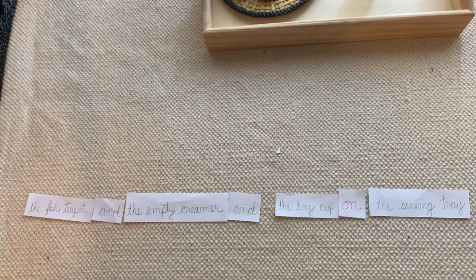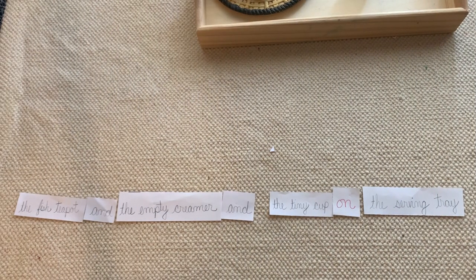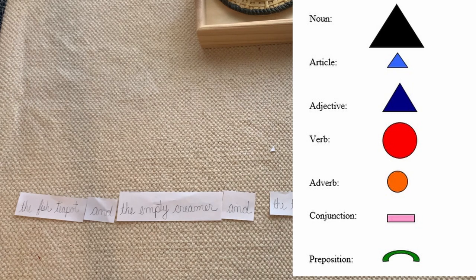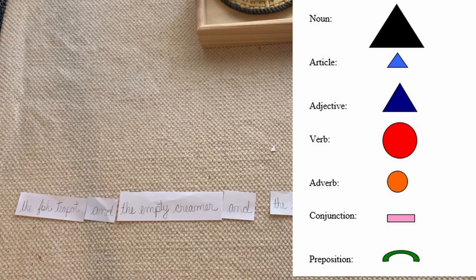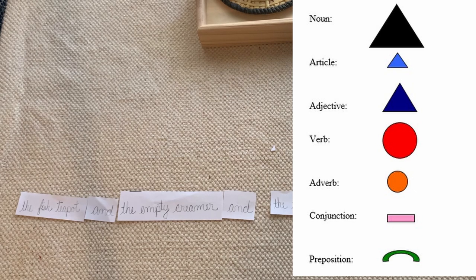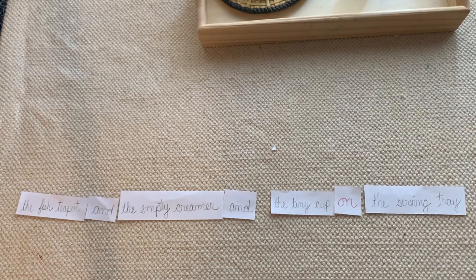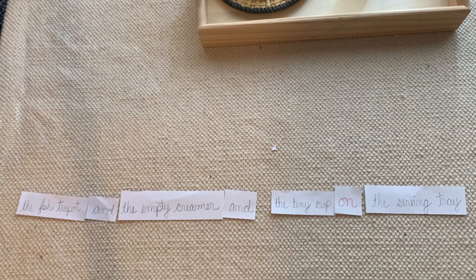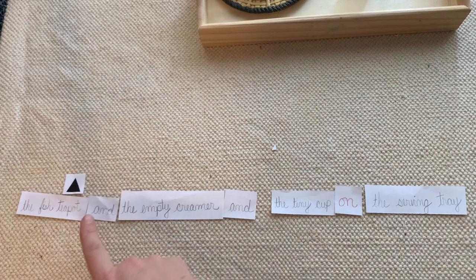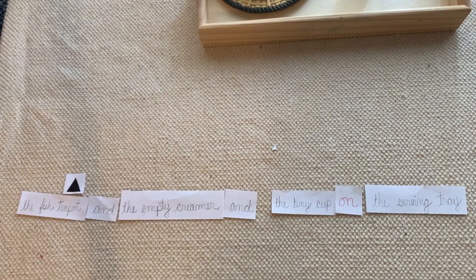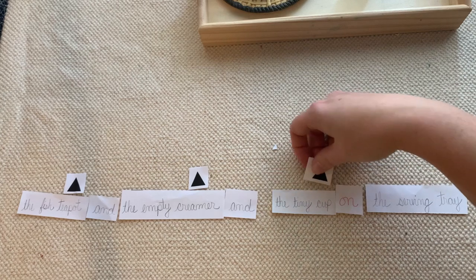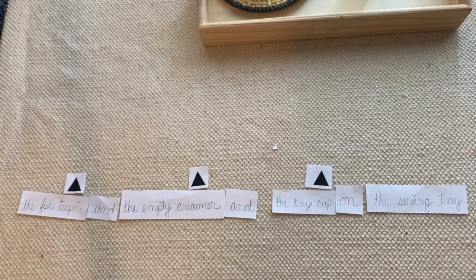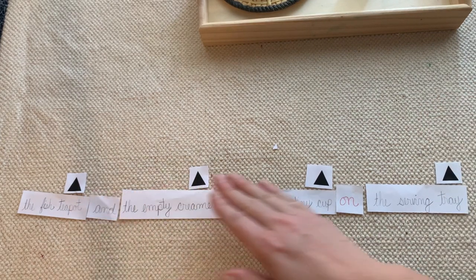Now we move to the third part of the lesson: symbolization. In Montessori, every grammar concept has a symbol — this is how we make it sensorial and concrete for the child. We've already had lessons on the article, noun, adjective, and conjunction, and now we're learning the preposition. We ask the child to apply all the symbols they remember. For the nouns — the teapot, the creamer, the cup, the tray — each gets the large black triangle. So we identify our nouns and symbolize them.